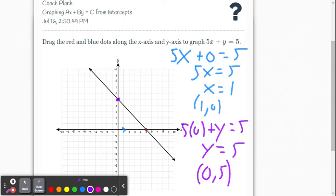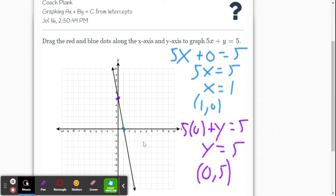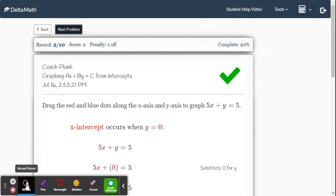So now, in delta math, to graph it, we just grab the points. So we take this point, we move it to that point. It was already there in this case. And in this one, we move it to right here. And submit it. And we got it right.